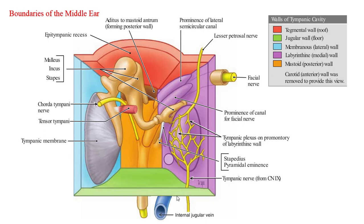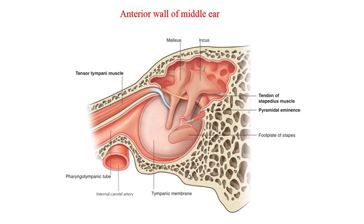Near the medial wall, the floor presents the tympanic canaliculus which transmits the tympanic branch of the glossopharyngeal nerve to the medial wall of the middle ear. The anterior or carotid wall: the uppermost part bears the opening of the canal for the tensor tympani, the middle part has the opening of the auditory tube, and the inferior part of the wall is formed by a thin plate of bone which forms the posterior wall of the carotid canal, separating the middle ear from the internal carotid artery.